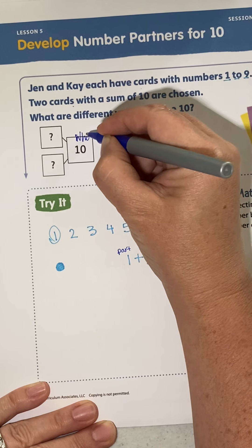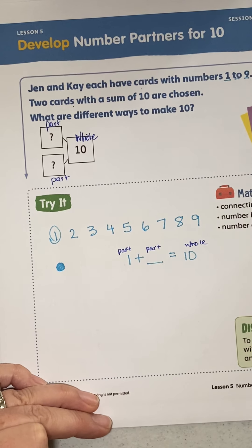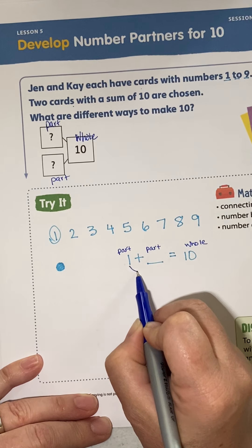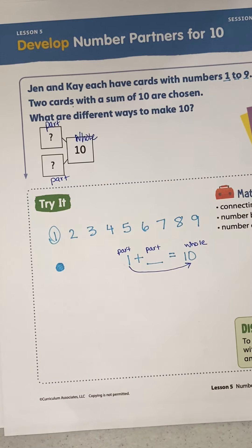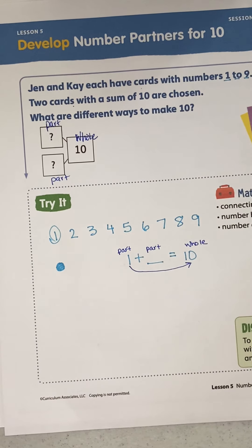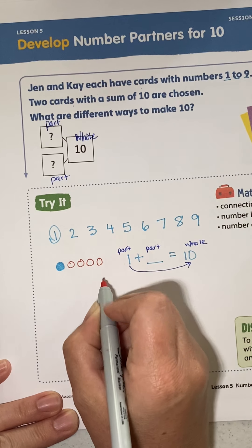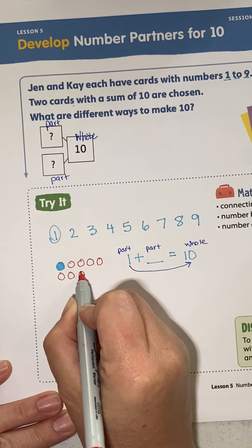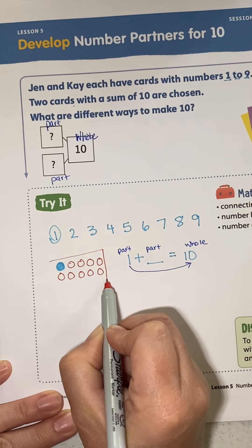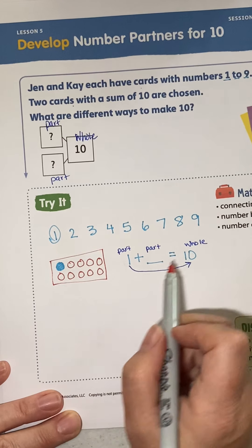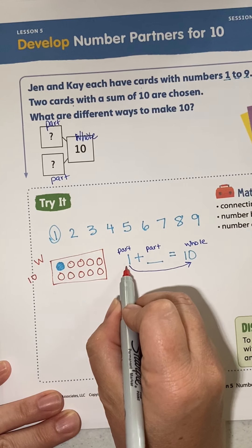So we have to know how to get from 1 up to 10. Well, we can count on from 1 and go to 10 to fill that 10 frame. Count with me: 1, 2, 3, 4, 5, new line, 6, 7, 8, 9, 10. So I filled up that 10 frame, right? I have a total of 10 in my box. That's what my whole is. The whole is 10, 1 is a part right here.